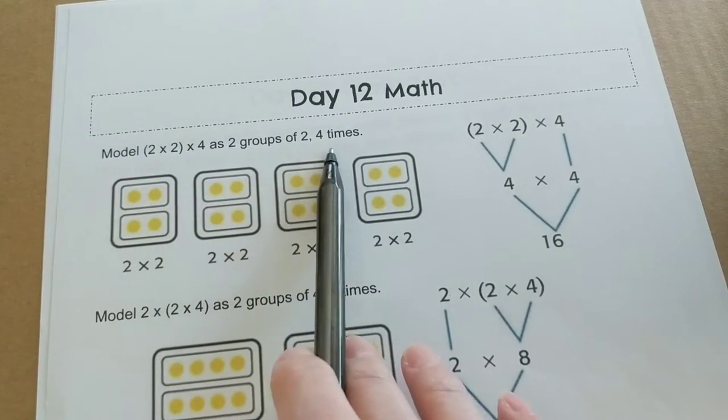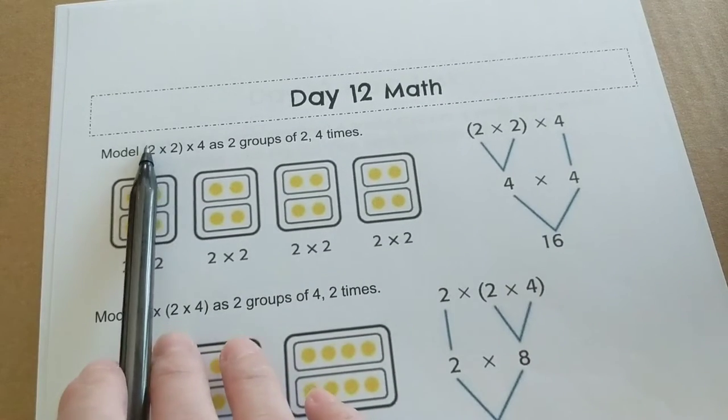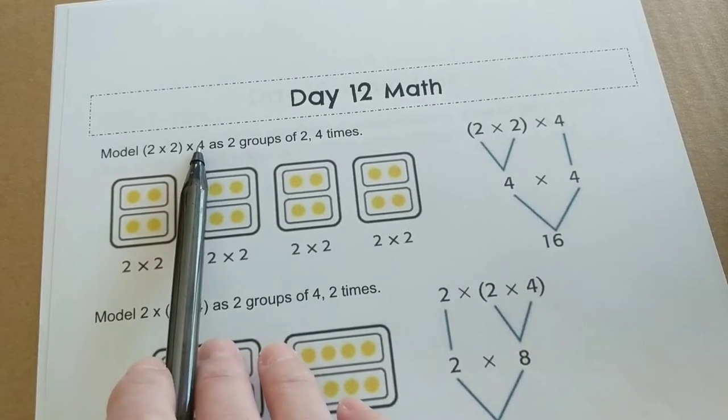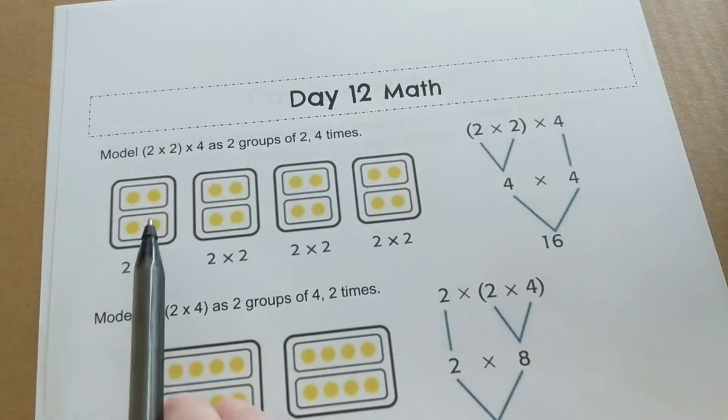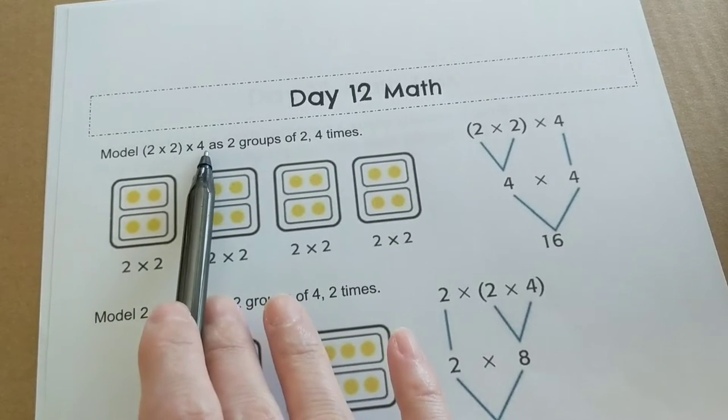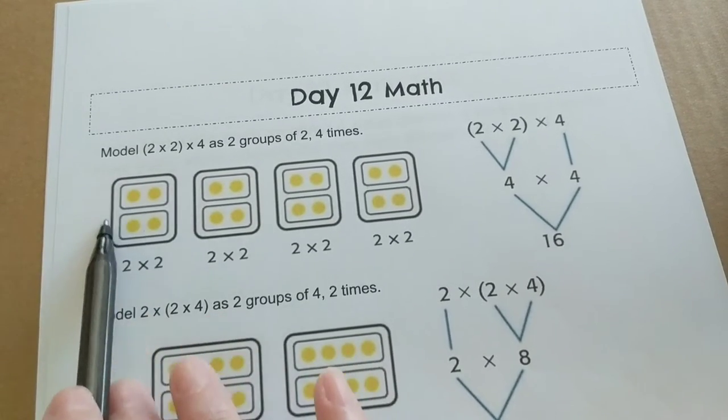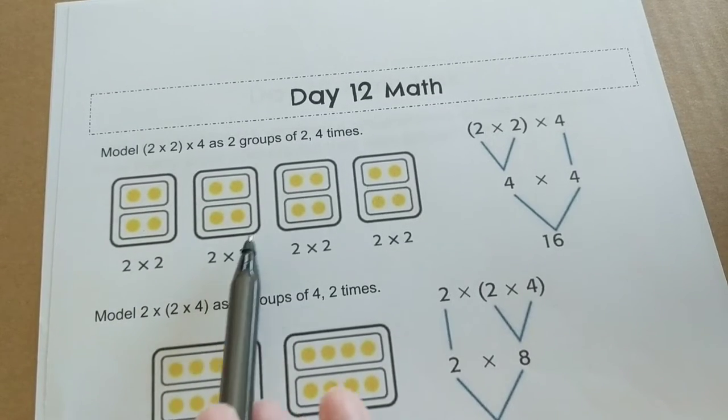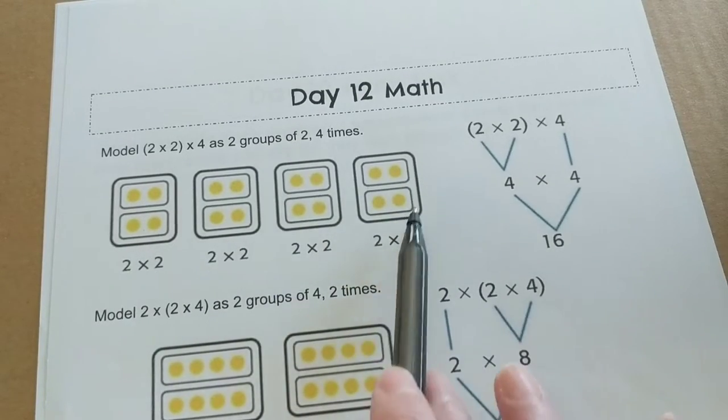So they've given us some examples here of ways you can multiply three factors. You can put parentheses around two of the factors and then multiply by that second factor. You can take the two times two if you have that in parentheses and multiply it four times. So they've made two groups of two into one group here. Two times two is four. That's two groups, three groups, four groups.